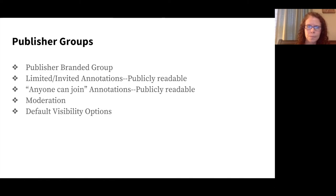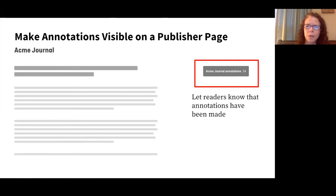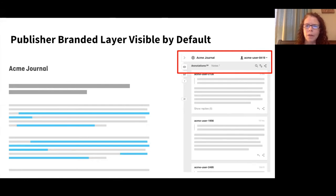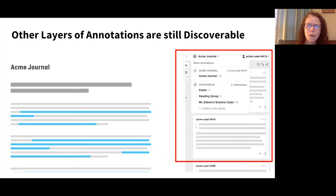Publisher groups are publisher-branded and moderated groups that are publicly visible by default when a user lands on your content. The publisher can decide who has the authority to make annotations and who has the ability to read them. It's very flexible. Here's an example of how your publisher layer can be made visible on your page through a button — the button can show that annotation capability is possible and even how many annotations exist on an article. The end user clicks the button and the publisher-branded moderated layer appears by default at the top. Annotation accounts can be auto-generated for logged-in users, so there's no need for them to have a Hypothesis account.